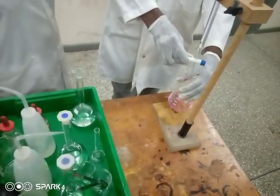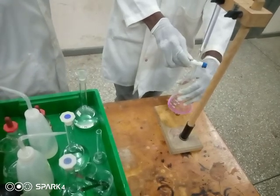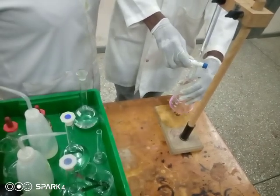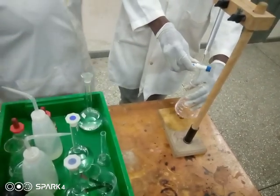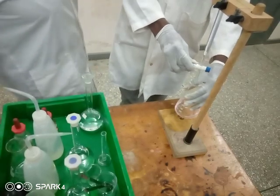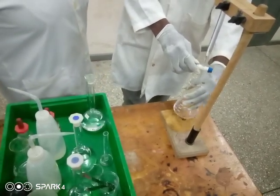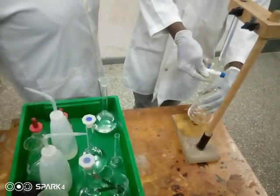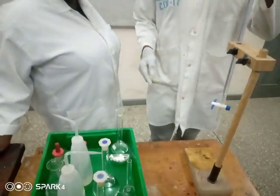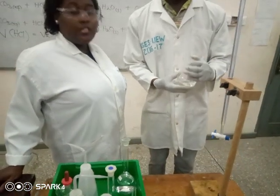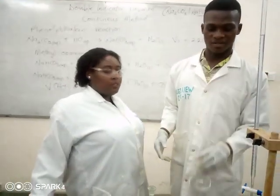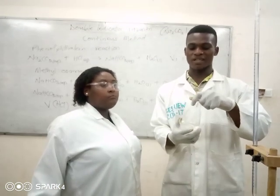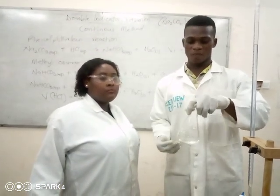One application of double indicator titration is in the preparation of vinegar. There is something called pickles, and in making pickles we use vinegar — so we have to know the ratio of vinegar to water to use, and for that you need double indicator titration. So I have a color change from pink to colorless, which tells us that we have done the phenolphthalein titration.